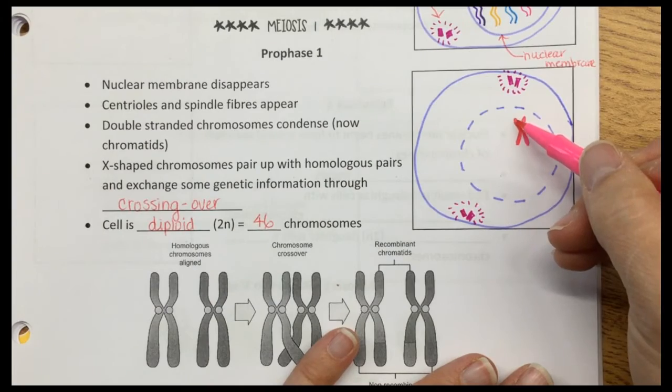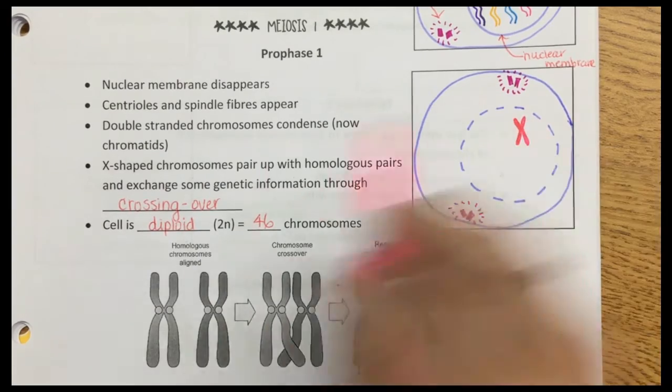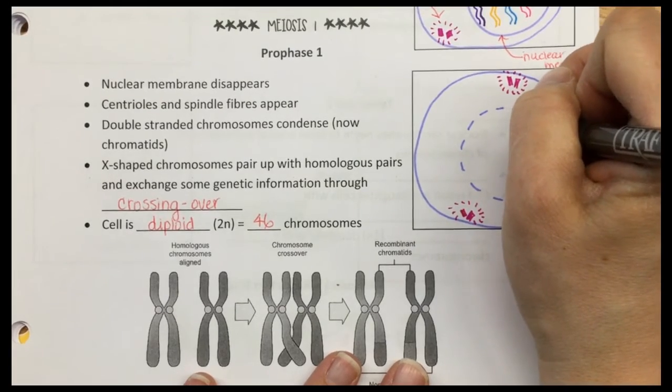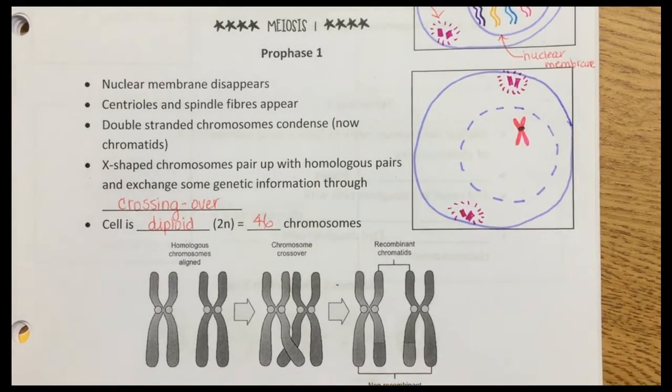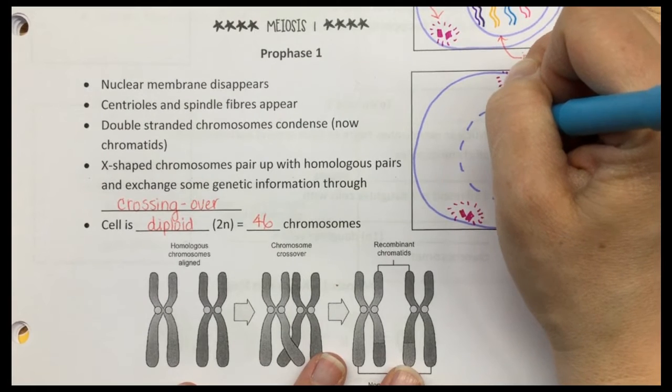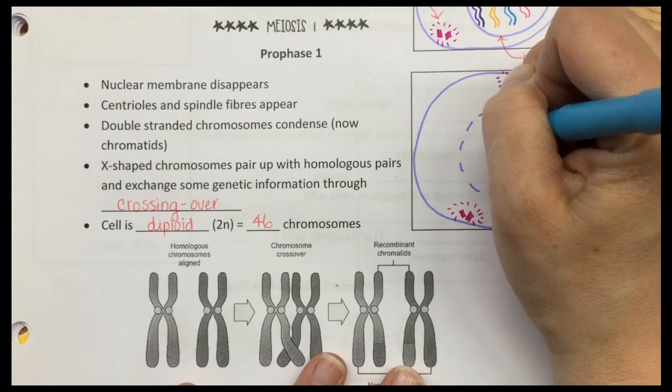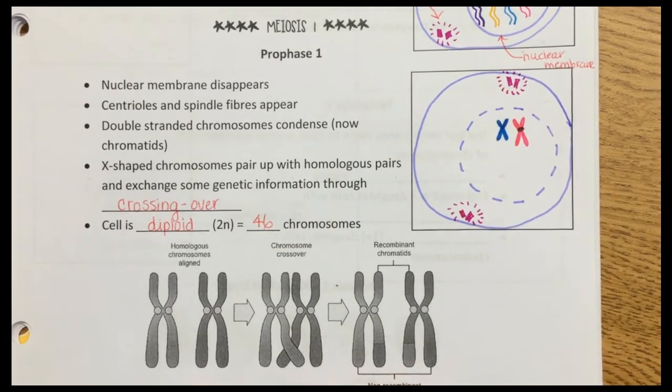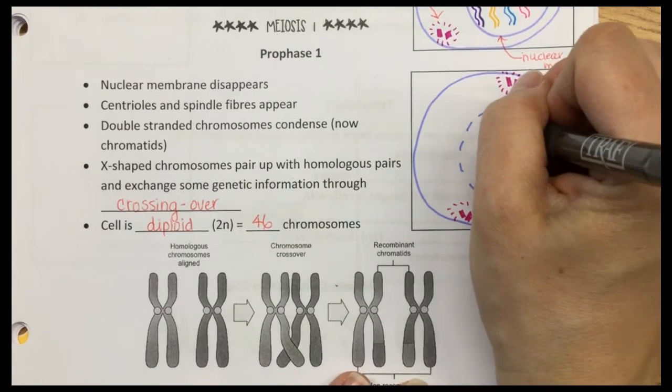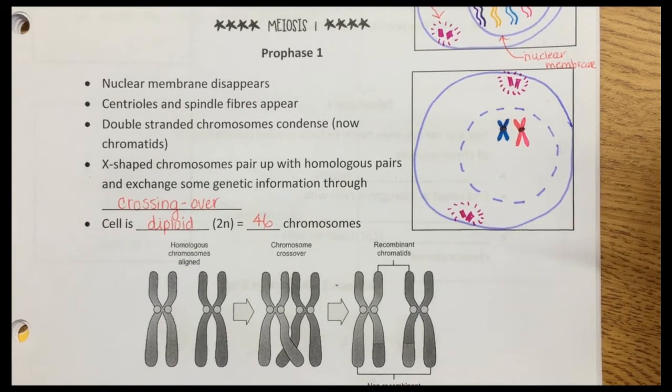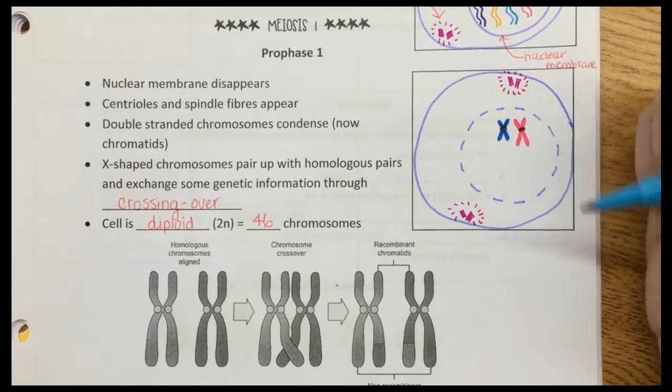These are double-stranded chromosomes, our x-shaped chromosomes. These are now chromatids because they are condensed. They are homologous chromosomes. I want to draw my blue pair also the same size as my pink pair.